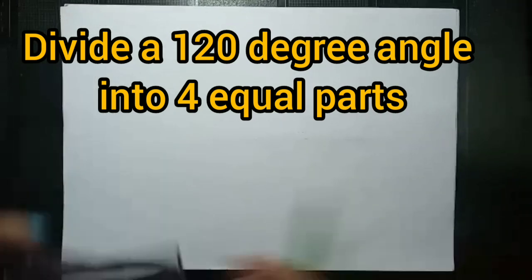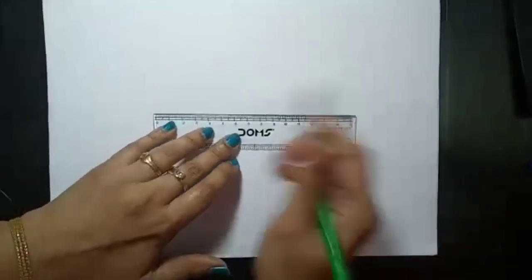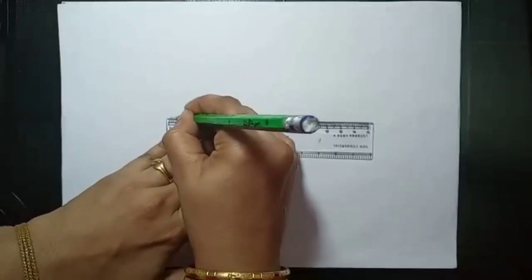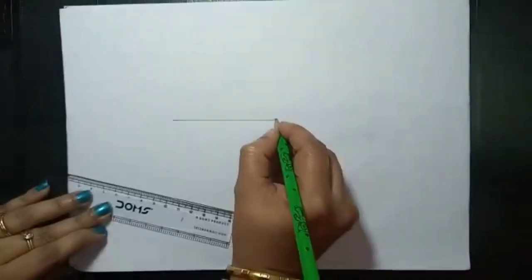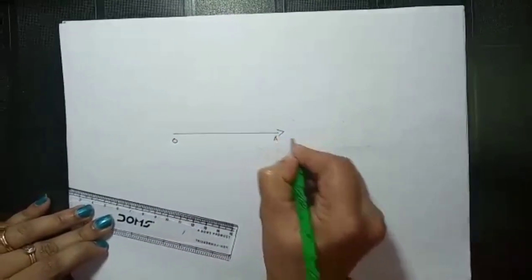Okay, so for that, first we have to draw a ray. Okay, ray OB, I am drawing here. Any length you can take. Here I have taken 6, 8 cm. Okay, this is my point O and this is the point A.